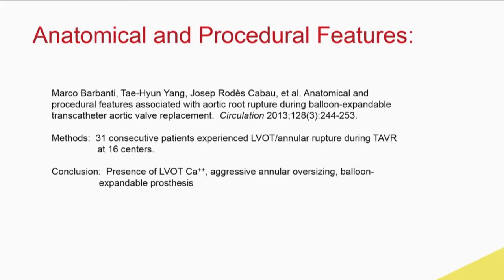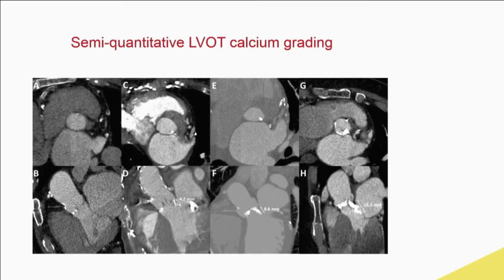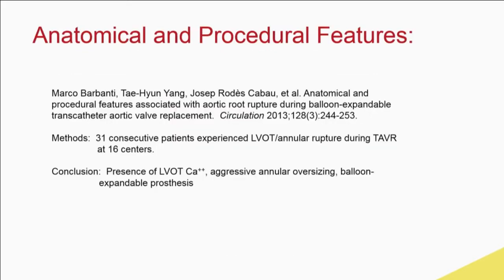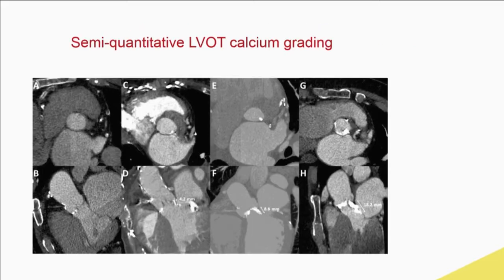This article was one of the first looks at potential risk factors — a 31-patient consecutive series from 16 centers. The criteria could mostly be summarized as the presence of LVOT calcium, particularly severe; aggressive oversizing; and balloon-expandable prosthesis. Going from left to right shows increasing gradations of calcium, and the far right represents the situation where we're usually thinking about avoiding TAVI altogether.